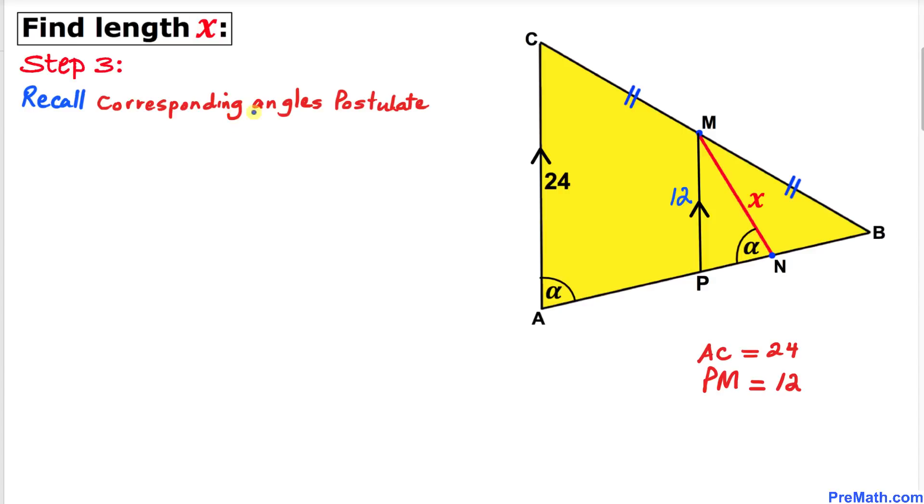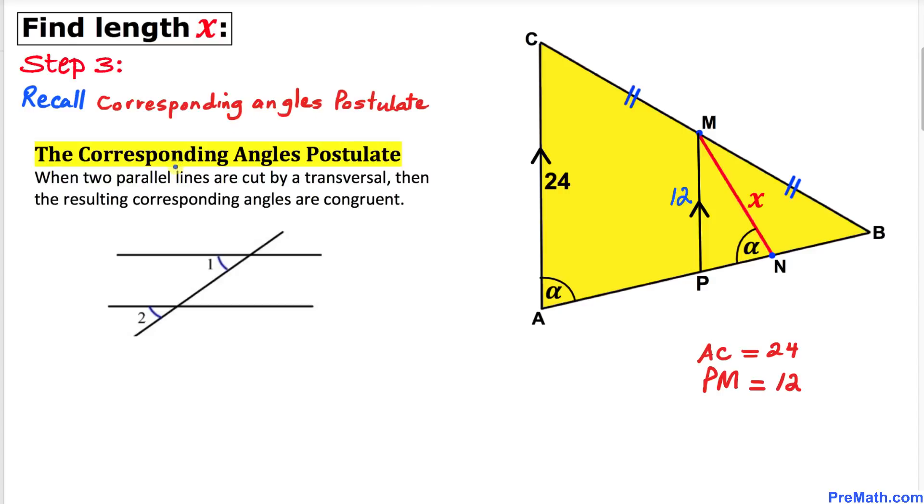Let's recall the corresponding angles postulate. When two parallel lines are cut by a transversal, then the resulting corresponding angles are congruent.